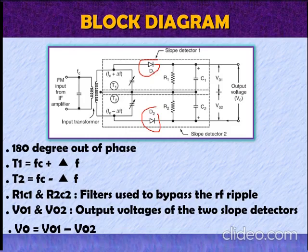There are three tune circuits. Out of them, the primary is tuned to IF, that is FC. This is the primary tune circuit and the upper tune circuit of the secondary T1 is tuned above FC by del F, that is the resonant frequency is FC plus del F, and the lower tune circuit of the secondary is tuned below FC by del F, that is at FC minus del F. R1C1 and R2C2 are the filters used to bypass the RF ripple.